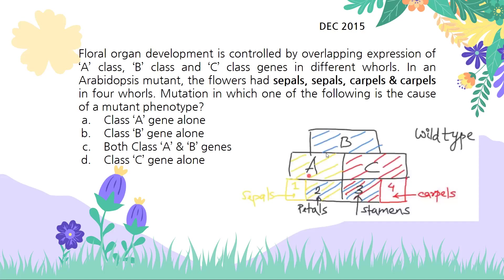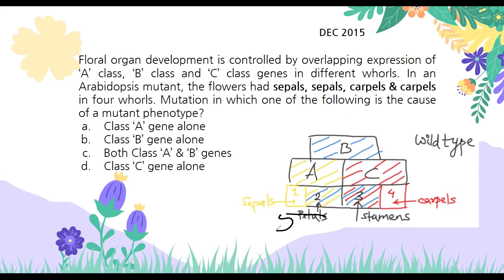In the wild type, we know there are three sets of genes: A, B, and C. A is responsible solely for formation of sepals, C solely for carpels. For petals you require both A and B, and for stamens the combined action of B and C. The question's phenotype is sepals, sepals, carpels, carpels — so instead of petals you have sepals, and instead of stamens you have carpels. Sepals require only gene A, carpels require only gene C, so this means only A and C are active — B is absent.